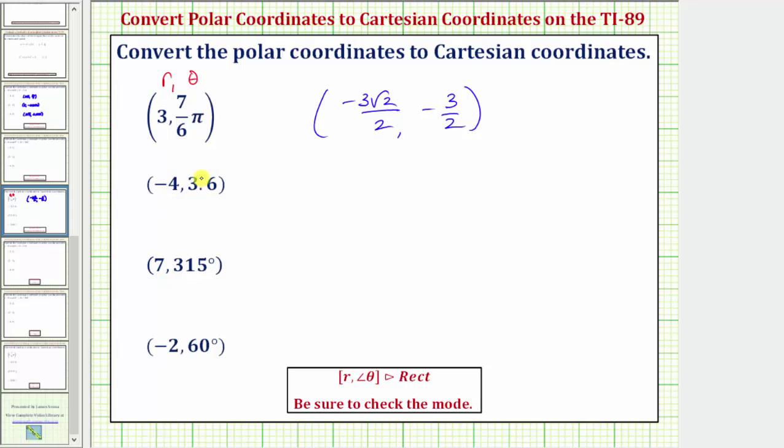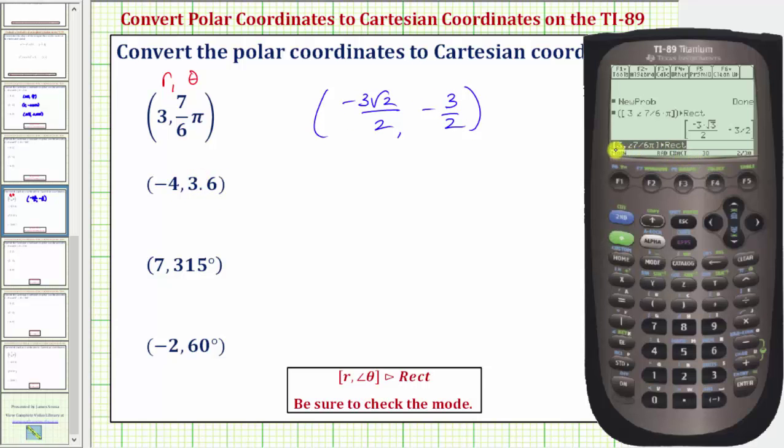For the next point theta is still in radians, so we can just edit this previous entry. Let's go ahead and do this. We'll press the right arrow, scroll back over to the polar coordinates, press the delete key several times to clear these coordinates.